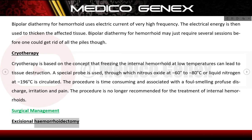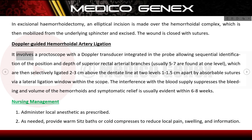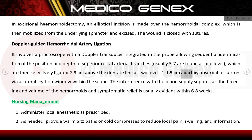In excisional haemorrhoidectomy, an elliptical incision is made over the haemorrhoidal complex, which is then mobilized from the underlying sphincter and excised. The wound is closed with sutures. Doppler-guided haemorrhoidal artery ligation involves a proctoscope with a Doppler transducer integrated in the probe, allowing sequential identification of the position and depth of superior rectal arterial branches — usually 5 to 7 — which are then selectively ligated 2 to 3 cm above the dentate line by absorbable sutures via a lateral ligation window within the scope.